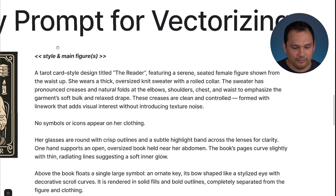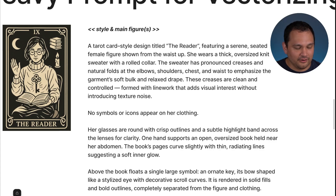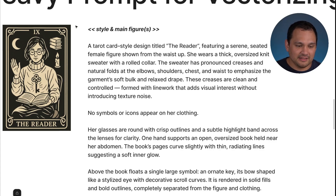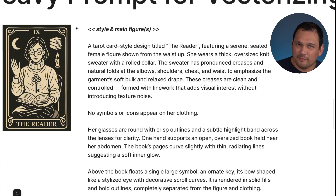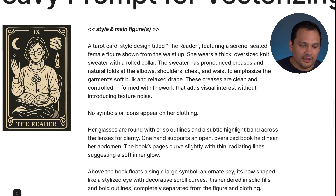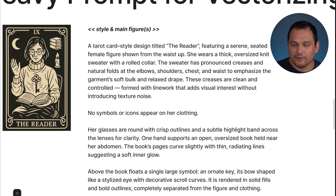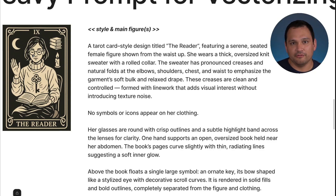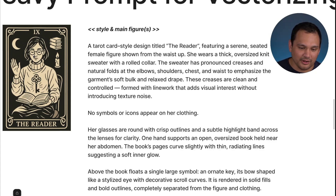We're taking this all the way to something much cleaner. This new design is obviously a tarot card, but it's better for apparel because you know exactly what it is — it's about a reader, with neatly arranged symbols. It's going to be much easier to process on the back end. All we have to do is throw it into Vectorizer AI and punch out the background color, and we do a lot of the heavy lifting by making this prompt very long.